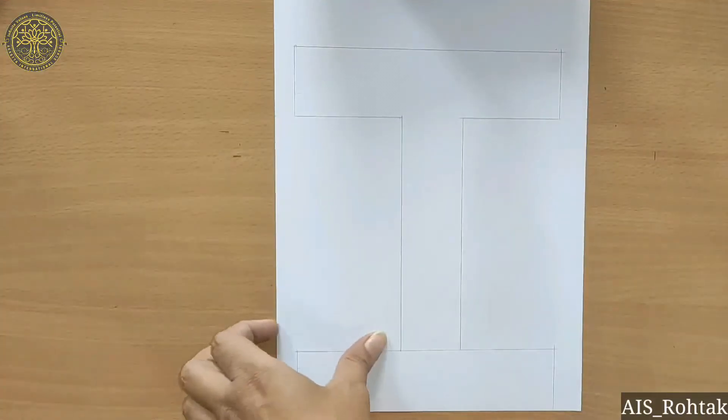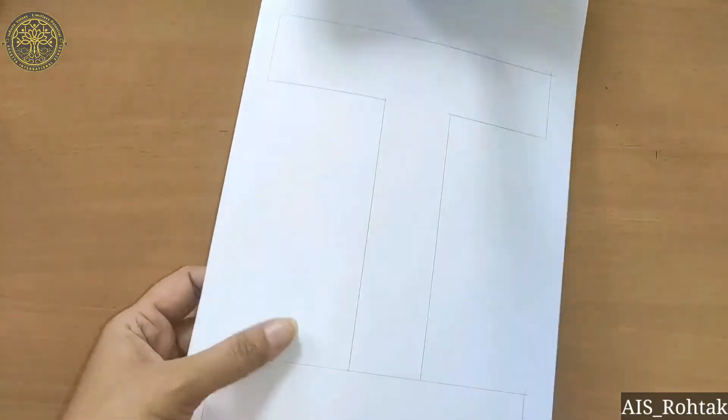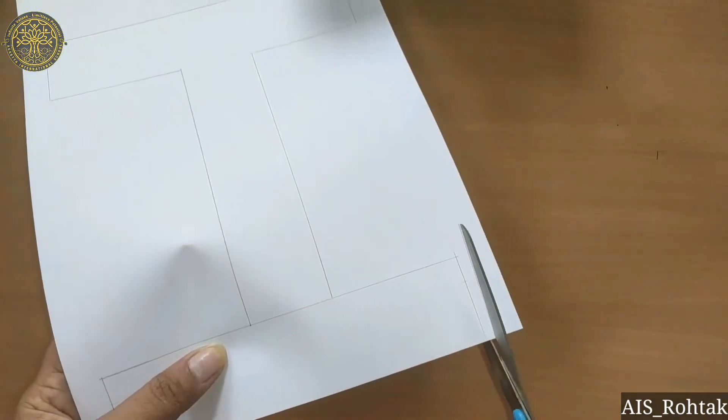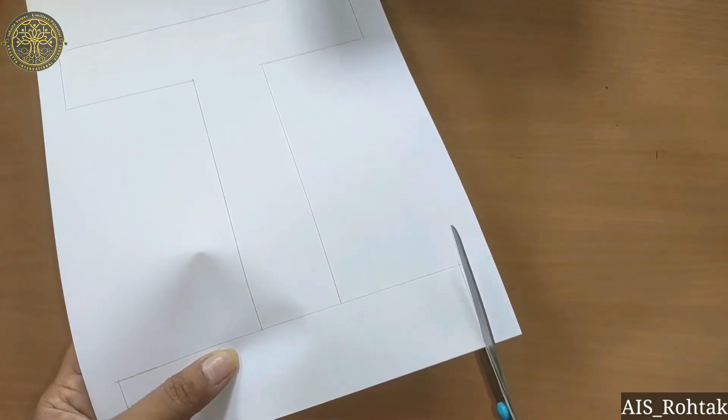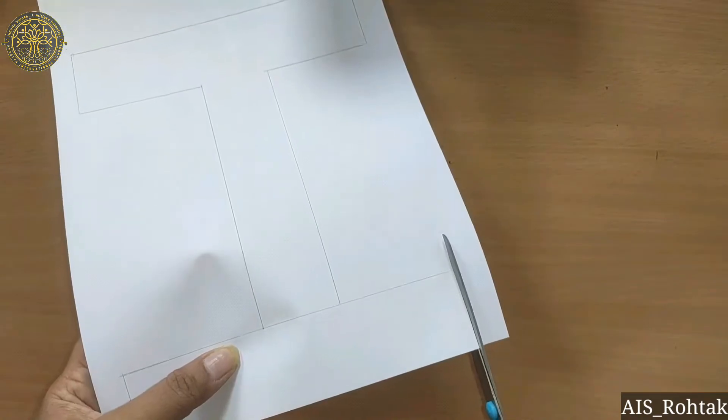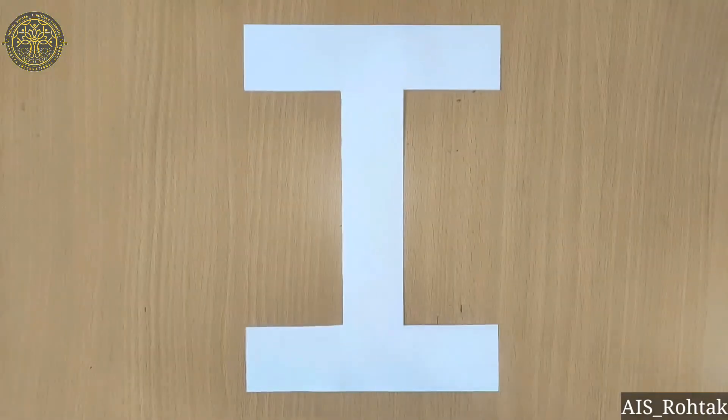Firstly, we draw I shape on the white sheet like this and then we will cut it. I request to the parents to kindly provide cutting material to the child.